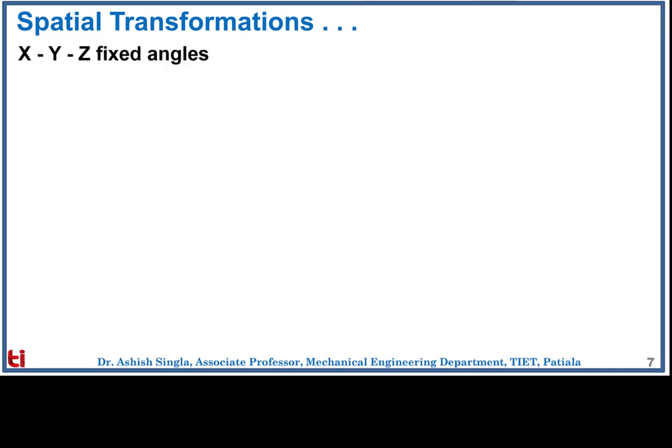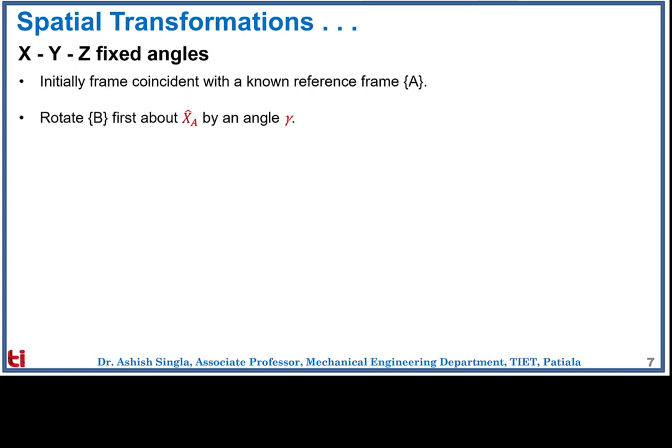Next comes the spatial transformation X, Y, Z angles. If we want to orient the body in 3D space at any arbitrary angle, that can be achieved by three rotations in sequence about the three main axes. The first category is called X, Y, Z fixed angles. Assume both frames are coincident. We will rotate the moving frame B about the fixed axis X_A — all orientations are taken with respect to the fixed frame of reference, which is why they are called XYZ fixed angles.